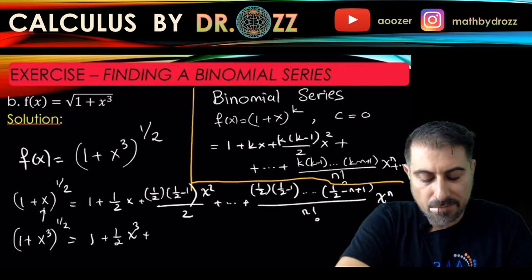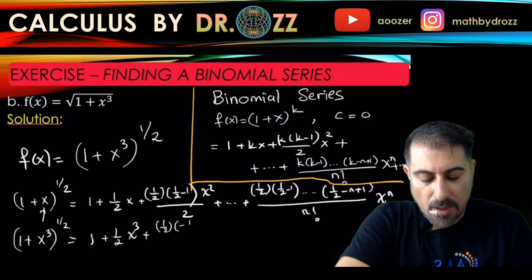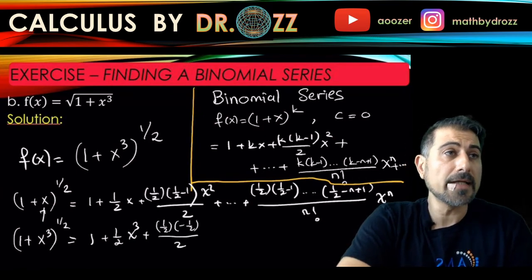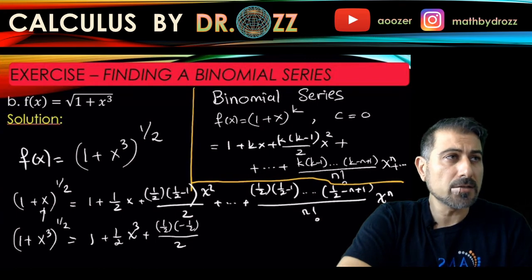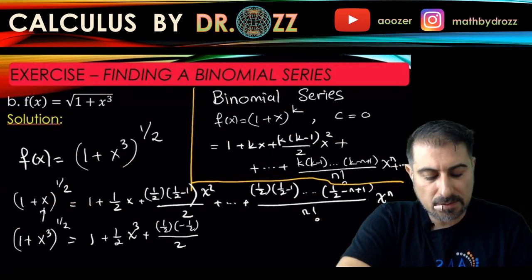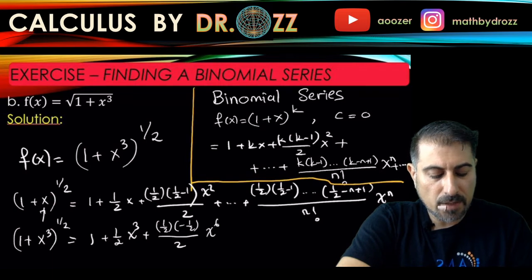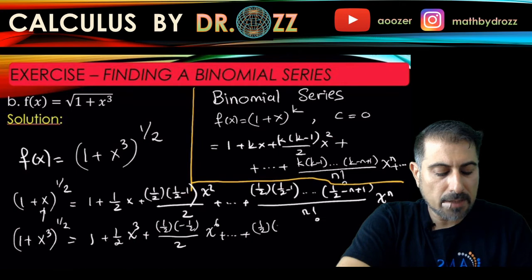(x³)², right, x³ squared, so it's going to be x⁶. Okay, (1/2)(−1/2)...(1/2 - n + 1) divided by n!... divided by n factorial.